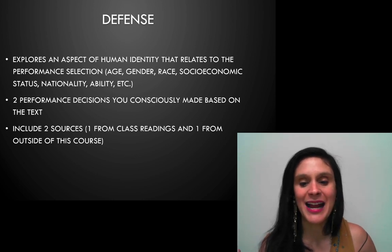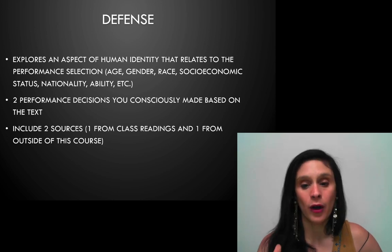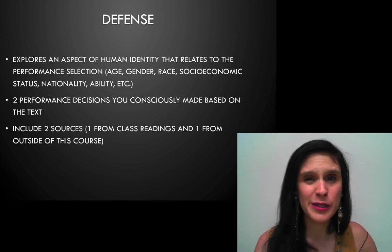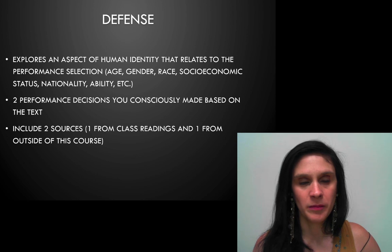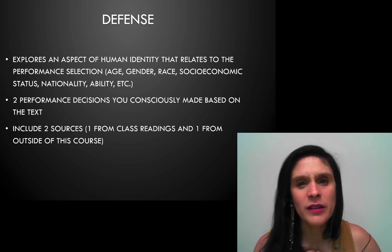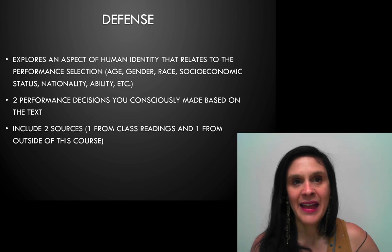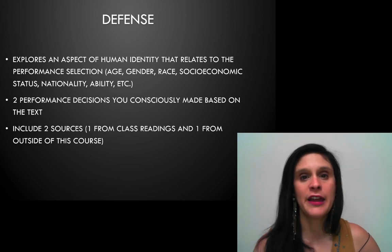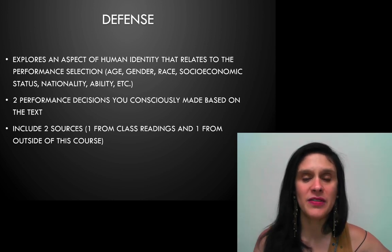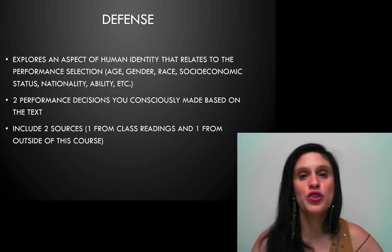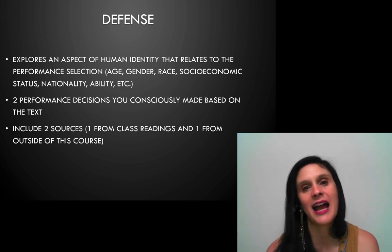For your defense, explore an aspect of human identity that relates to your performance selection — age, gender, race, socioeconomic status, nationality, ability — but also things like jealousy, how we mourn, or greed. What do we learn about being a human being? Then discuss two performance decisions you consciously made based on the text — getting rid of a character, choosing an accent, cutting a chunk of narration. Remember: as you create this performance you cannot add words in, but you can take them out. You can take out sections and put different sections together; you just can't add words.